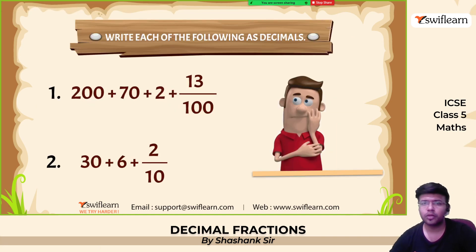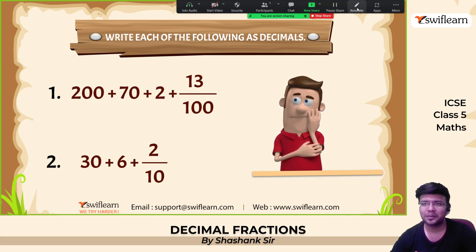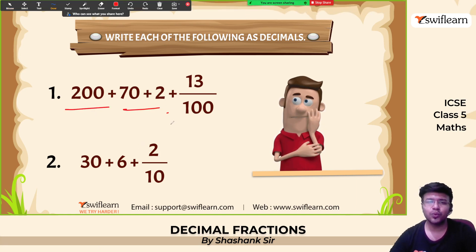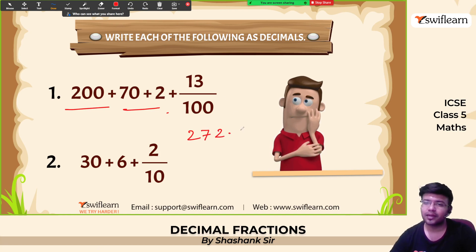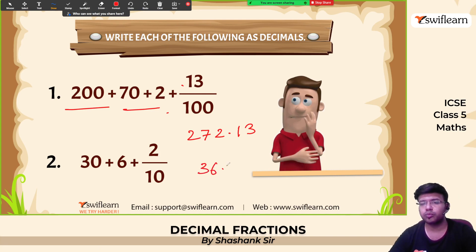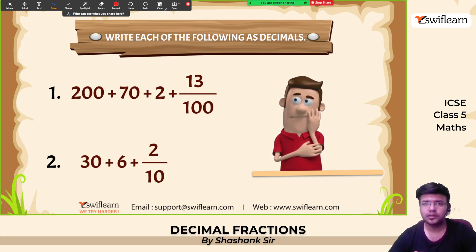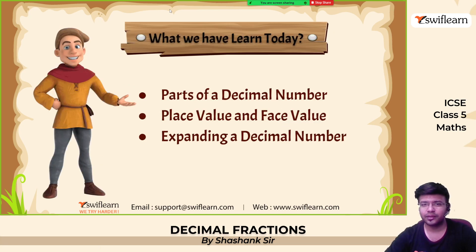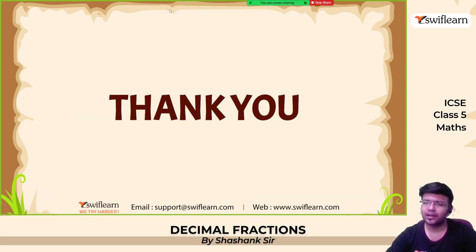This type of question tricked us last time. 272 and 13 hundredths: 13/100 is 0.13, so 272 + 0.13 is 272.13. That is the answer.